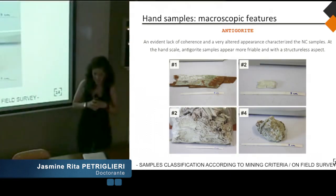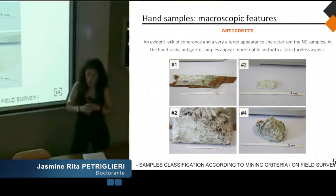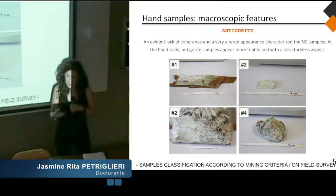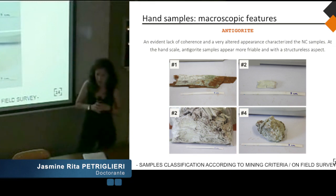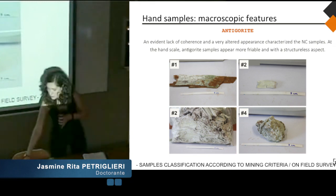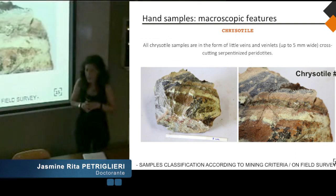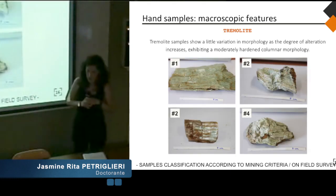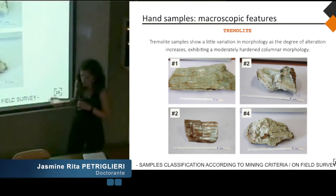At the hand-sample scale, samples of New Caledonia show an evident lack of coherence and a very altered appearance. Especially for antigorites, increasing the degree of alteration from one to four, antigorites appear more friable and characterized by a structureless aspect. Chrysotiles appear in the form of little veins and veinlets cross-cutting the serpentinized peridotite, which is the typical aspect found at outcrops of New Caledonia. Tremolite samples show little variation in morphology as the degree of alteration increases, and are characterized by typical columnar morphology.